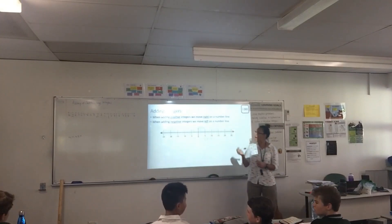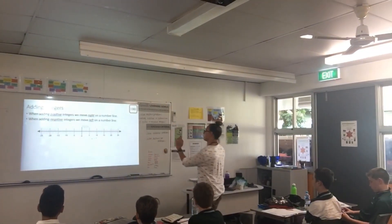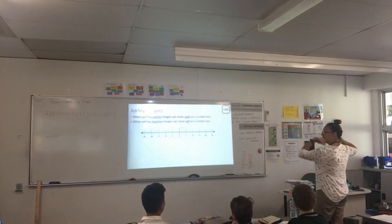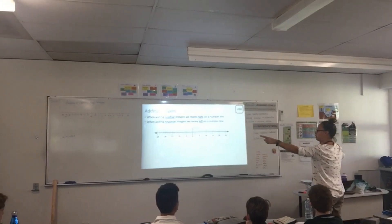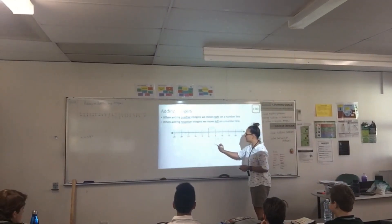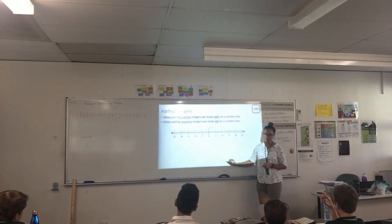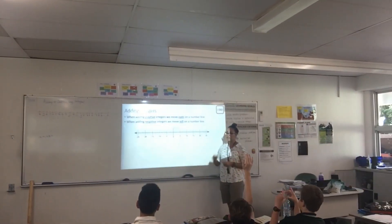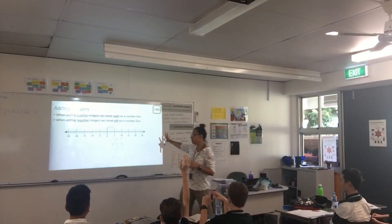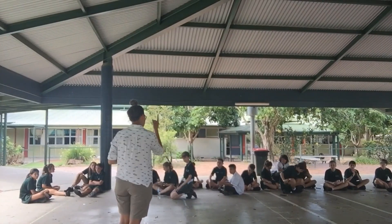So adding positives, we move to the right — I'm going to stand like this. When we're adding negatives, we go that way. So when you see adding negatives, you'll see it written like this: a number plus negative, another number. We're going to go outside and do this now. Add a negative number — you actually go in that direction.